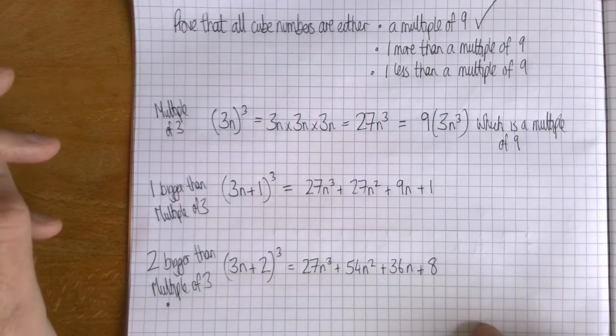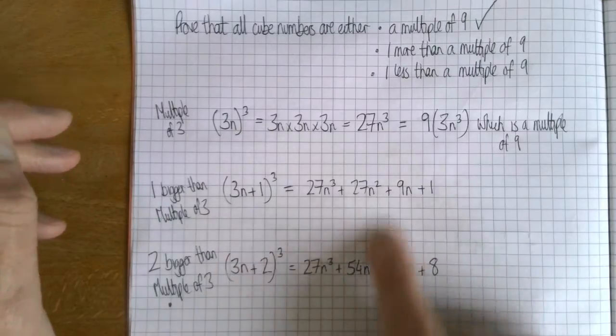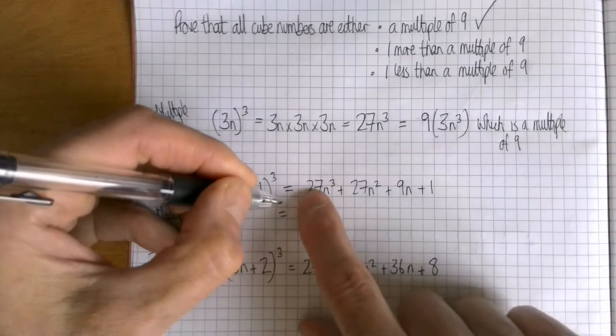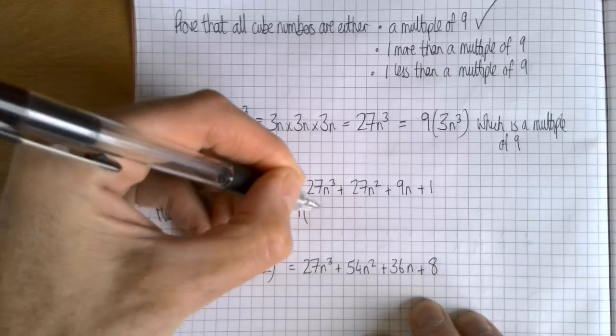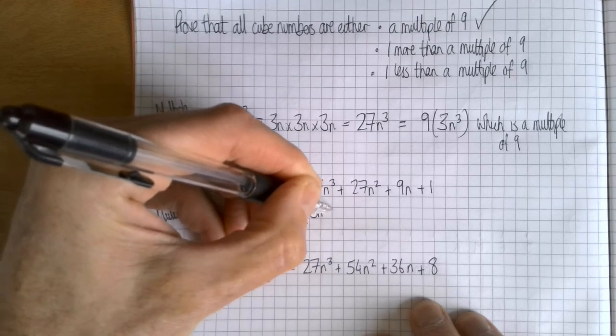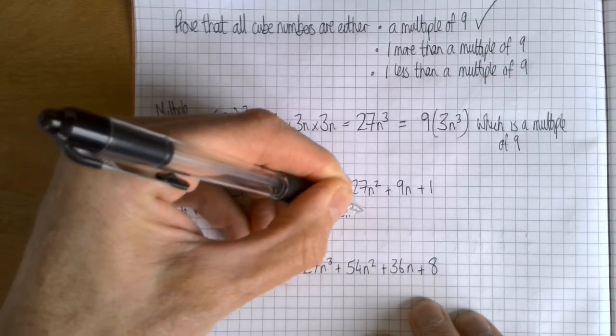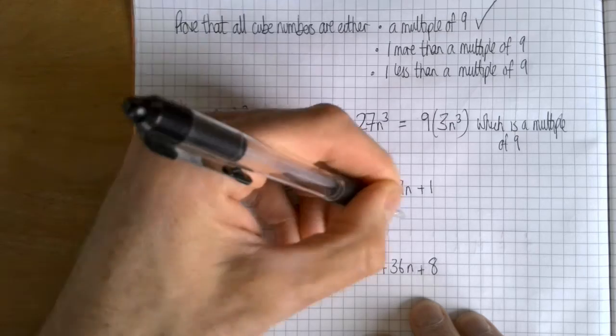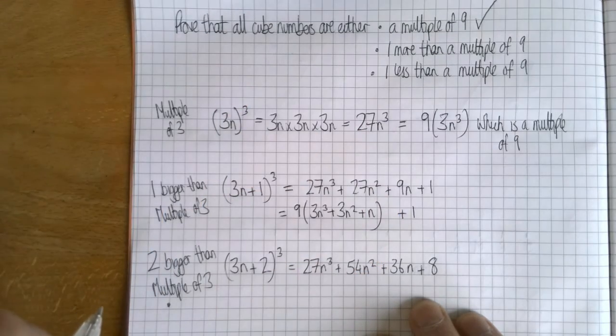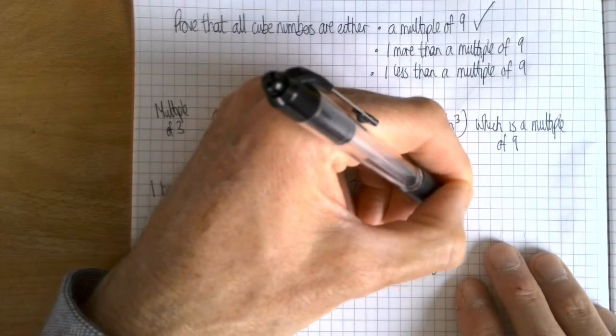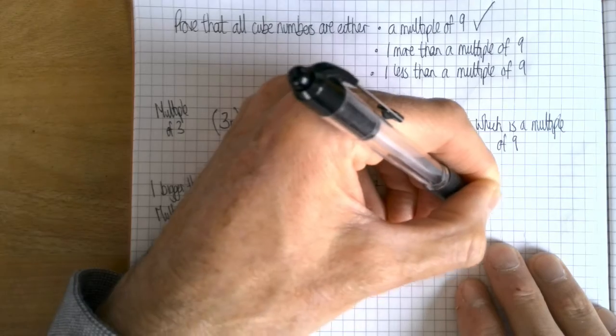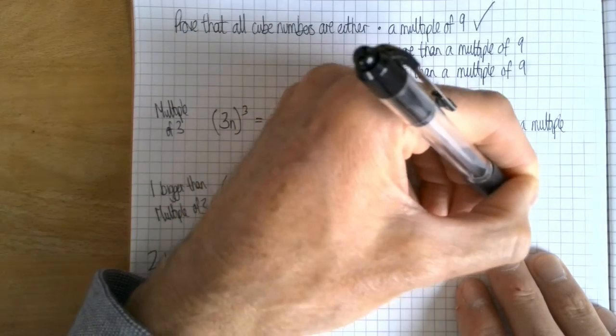Now I've already got the multiple of nine, so I'm hoping that one of these is one more and one of these is one less. Well if I look at this one, this bit I can write as nine times something plus the one, plus the one at the end. So this is this plus one, so that's one more than a multiple of nine.